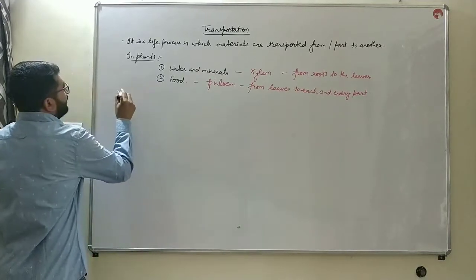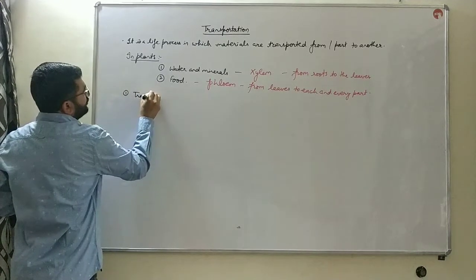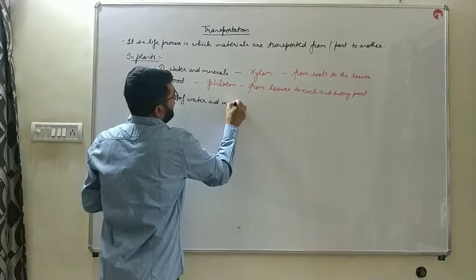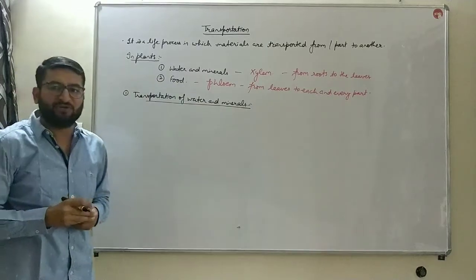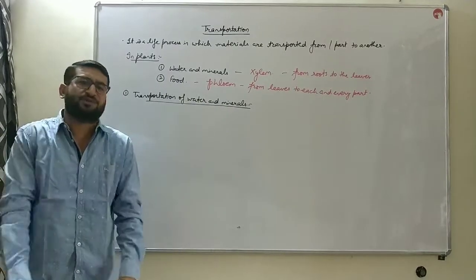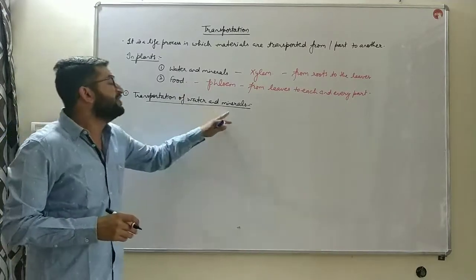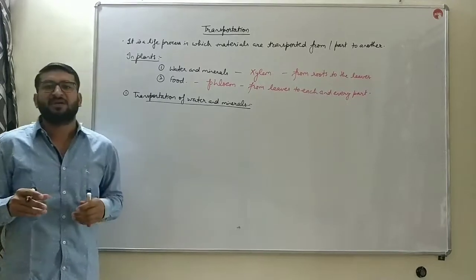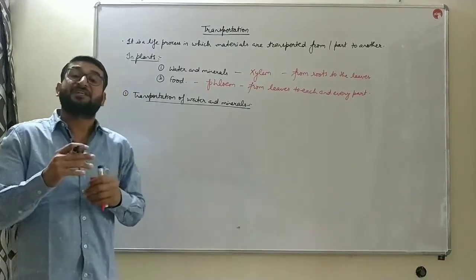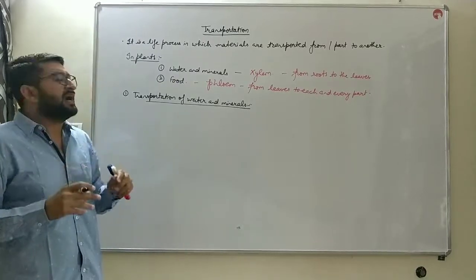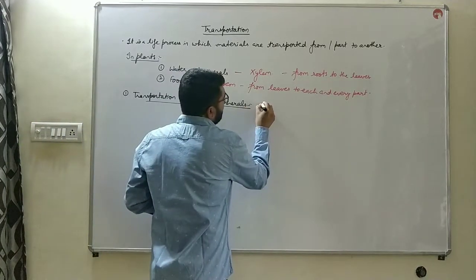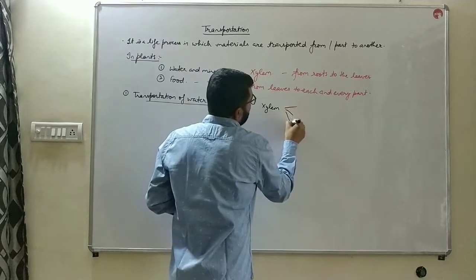First we will discuss the transportation of water and minerals, that is transportation through xylem. Water is a structural component of the cell and also a necessary raw material for photosynthesis — without water, no photosynthesis takes place. Various minerals like nitrogen, phosphorus, magnesium, calcium, and chlorine are required by plants for various metabolic and photosynthetic activities. These minerals are absorbed by the plants through their roots and transported by the help of xylem.